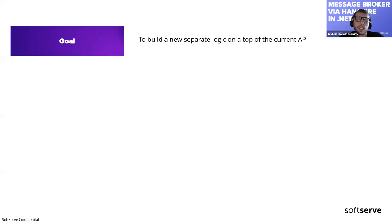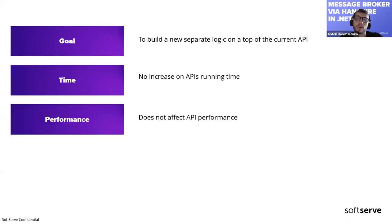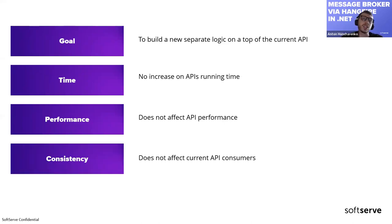What was the initial problem? We got a request from one of our customers to build new separate logic on top of our current API. Specifically, we had to introduce a sync approach to sync data from one tenant to another. Since we were using API versioning, we shouldn't create a new version, and our new approach should not affect API performance or increase API running time.